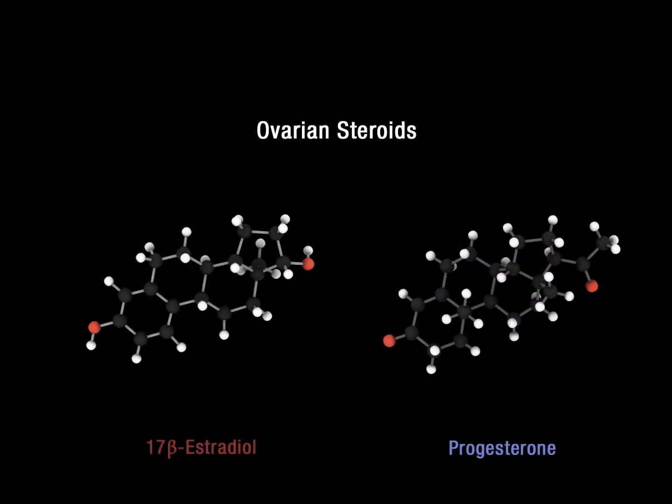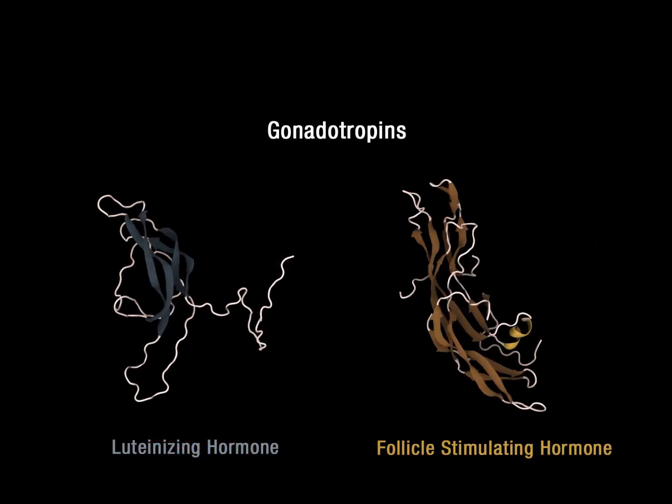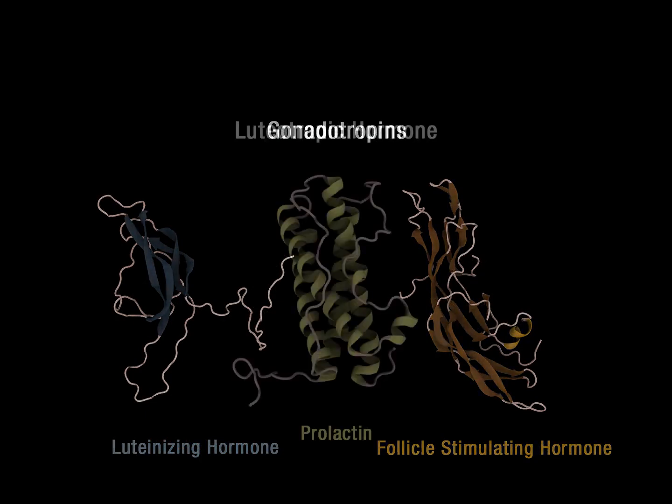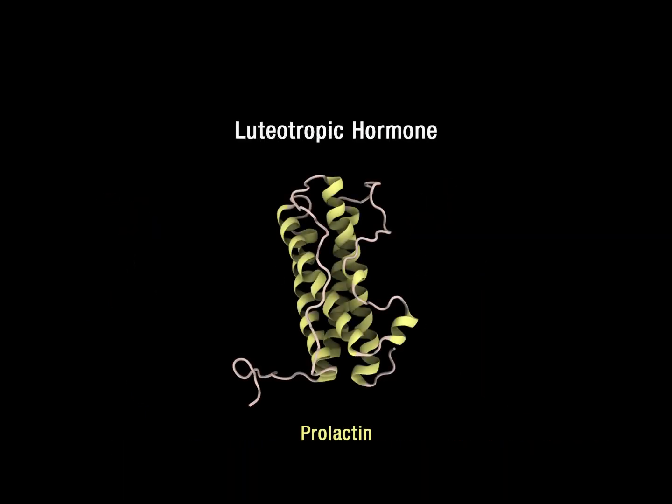Defined fluctuations in the circulating levels of the ovarian steroids 17-beta estradiol and progesterone, the gonadotropins luteinizing and follicle stimulating hormones, and the luteotropic hormone prolactin signal transition through these reproductive stages.